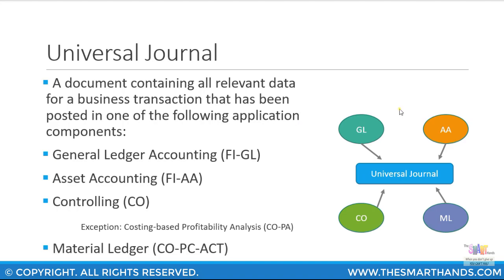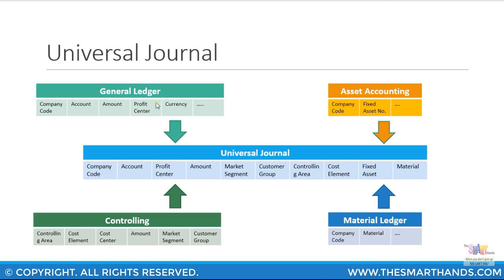In S/4HANA, the ACDOCA table contains all module information in one single table entry, which makes it much easier for reconciliation. In this diagram we can see this in more detail — for example, in your general ledger tables you will have your company code, general ledger account, amount, profit center, currency, and so on. These are all copied to the universal journal table.